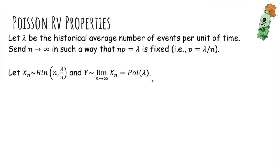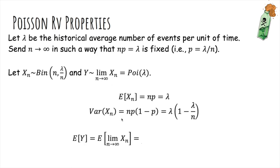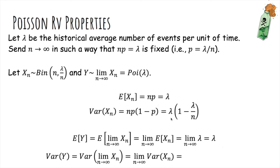So now let's compute the expected value and variance of a Poisson random variable. The expected value of X_n is just n times lambda over n, which is just lambda. The variance of X_n is np(1 minus p), or lambda times 1 minus lambda over n. And remember, Y is our limit as n goes to infinity of X_n. So the expected value of Y is the expected value of this limit, which is just the limit of the expected values, which is just lambda, because there's no n here. But the variance of a Poisson, we just take the limit of this variance as n goes to infinity, and this is 1 minus 0. So you actually end up getting lambda as well for the variance.